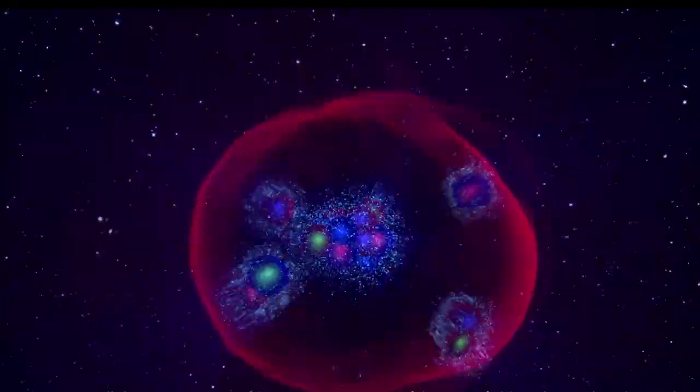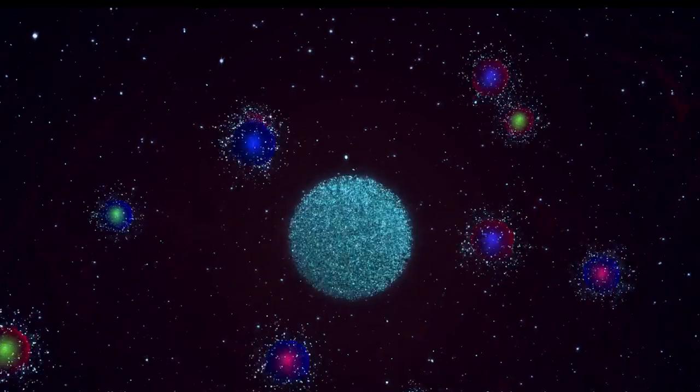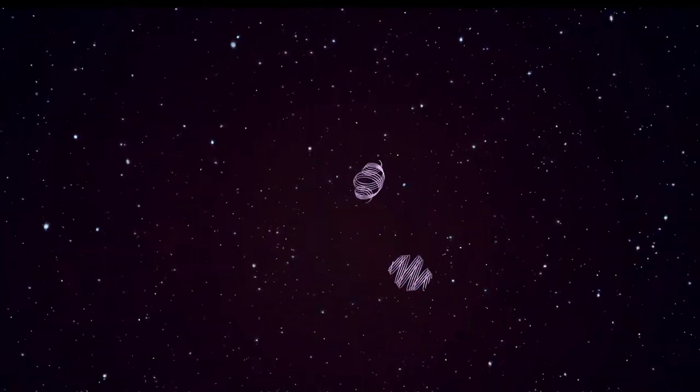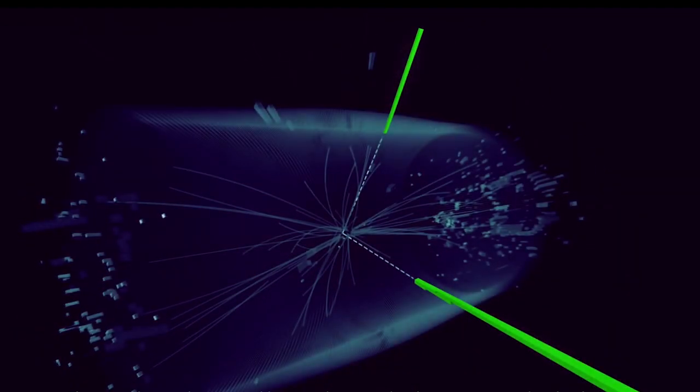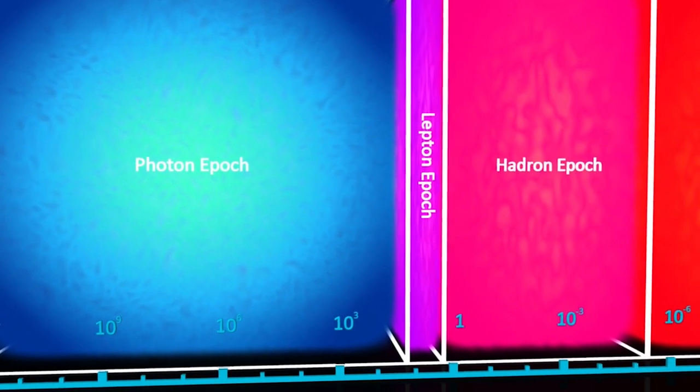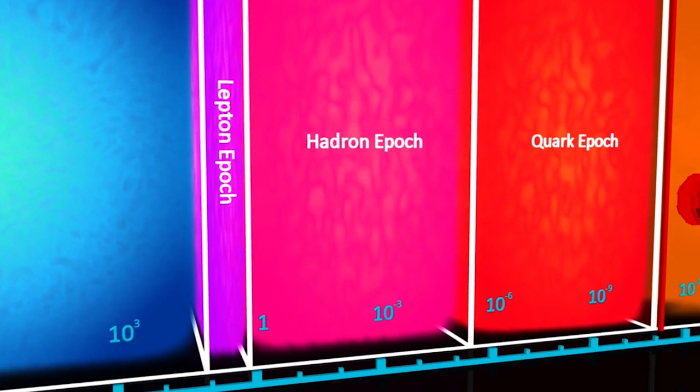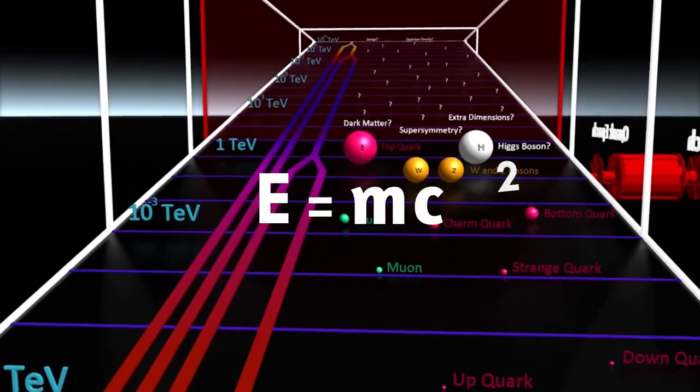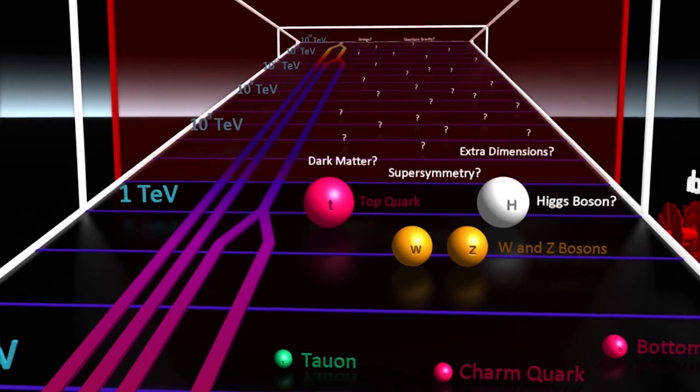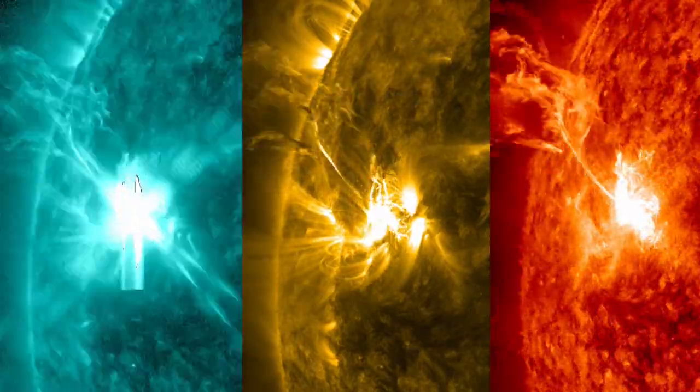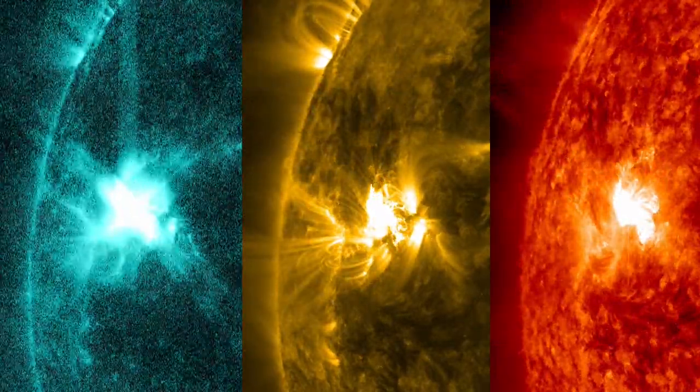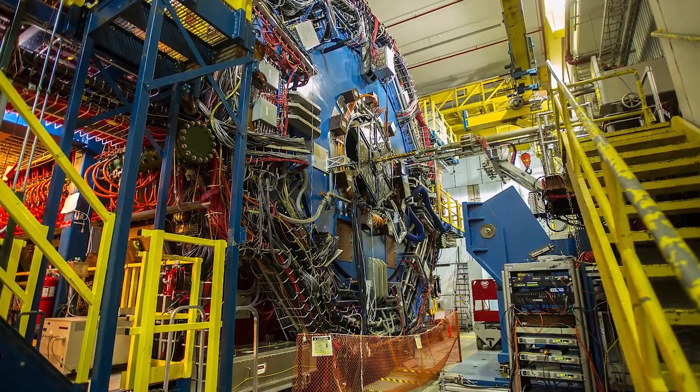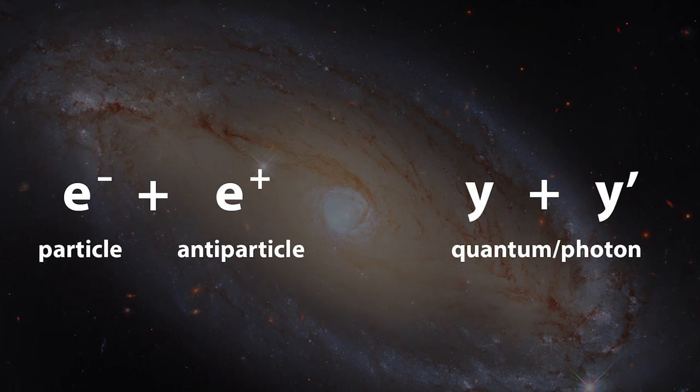The primary finding is that pairs of electrons and positrons, particles of matter and antimatter, can be created directly by colliding very energetic photons, which are quantum packets of light. This conversion of energetic light into matter is a direct consequence of Einstein's famous E equals MC squared equation, which states that energy and matter, or mass, are interchangeable. Nuclear reactions in the sun and at nuclear power plants regularly convert matter into energy. Now scientists have converted light energy directly into matter in a single step.